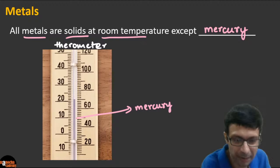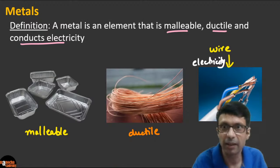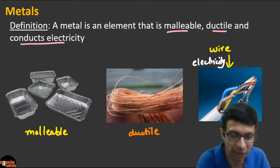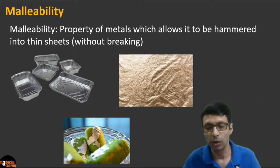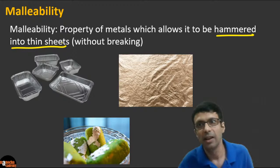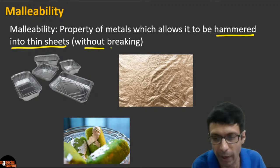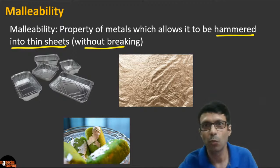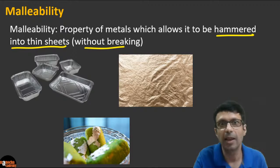Malleability is a property of metals which allows them to be hammered into thin sheets without breaking them. If you take metals, you can beat them into thin sheets.